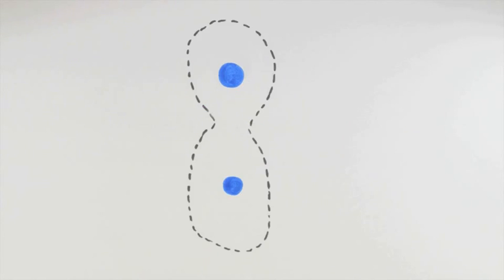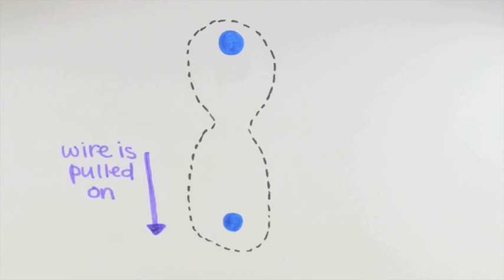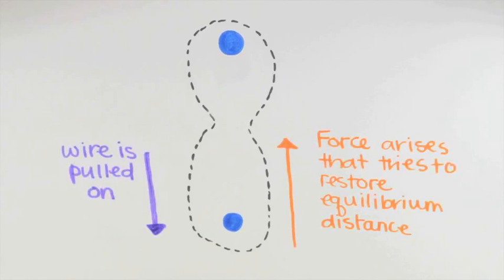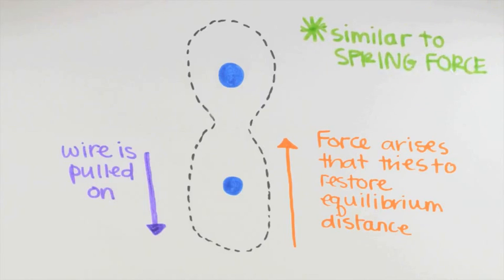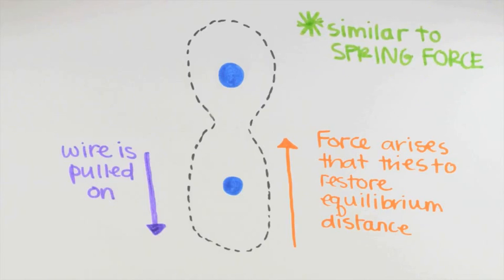Now, if the wire is pulled on, then, as the atoms separate in the wire, there arise forces that try to restore the separation between the atoms back to the equilibrium distance. This is very much like the way the spring force we discussed earlier works, always acting to restore the spring to its natural, relaxed length.